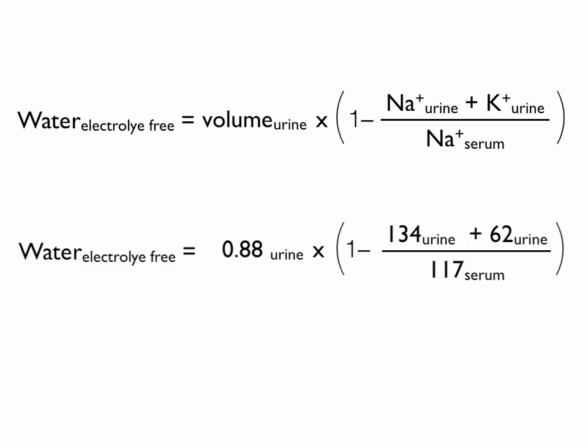First, we take a look at the urine and see how rich in electrolytes it is compared to the serum. You take the urine sodium plus potassium, divide that by the serum sodium. That's the electrolyte content. We're actually most interested in the water content, so we take 1 minus that, multiply that by the urine volume, and that's what we get.